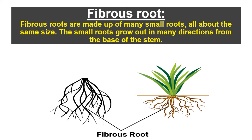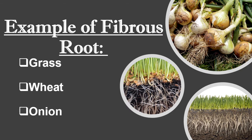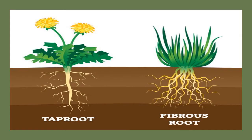Next comes fibrous roots. Fibrous roots are made up of many small roots, all about the same size. The small roots grow in many directions from the base of the stem. Examples of fibrous roots include grass, wheat, and onion. In the picture, you can easily see some small roots, which are called fibrous roots. This is the difference between taproot and fibrous root.